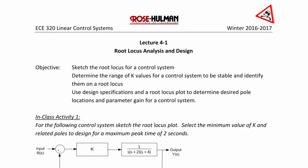The objectives of today's lecture are to sketch the root locus for a control system, to determine the range of k-values for a control system to be stable and identify them on a root locus, and finally our new objective is to use design specifications and a root locus plot to determine the desired pole locations and parameter gain for a control system.